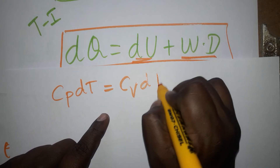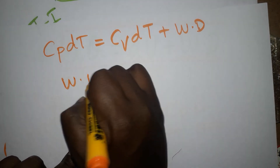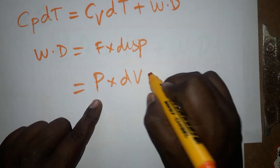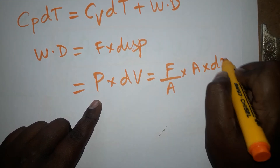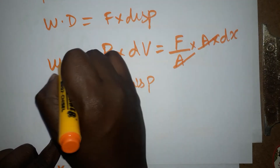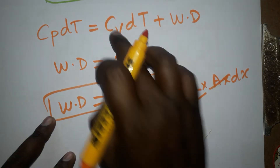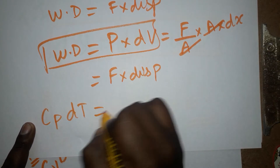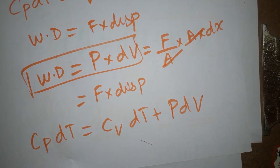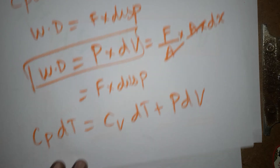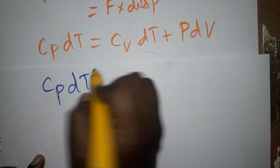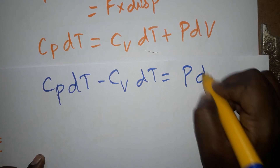Work done is force times displacement. Here I take it as pressure times change in volume — P·dV — because pressure is force per unit area and change in volume equals area times change in length, so area cancels giving force times displacement. Substituting: Cp·dT equals Cv·dT plus P·dV. Rearranging, Cp·dT minus Cv·dT equals P·dV, which gives us (Cp minus Cv)·dT equals P·dV.